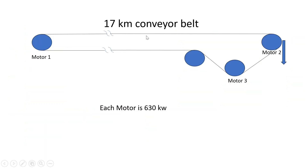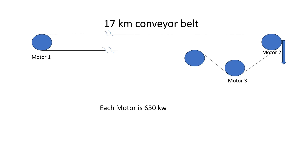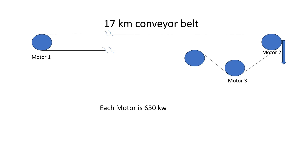But in our case it is very critical — it is a 17 km conveyor belt and the cost is high. So you have to control precisely. There is another parameter named 'add mode'. You know torque mode and speed mode — the third mode is add mode. So you can run the Master-Follower drive in three ways: torque mode, speed mode, and add mode.